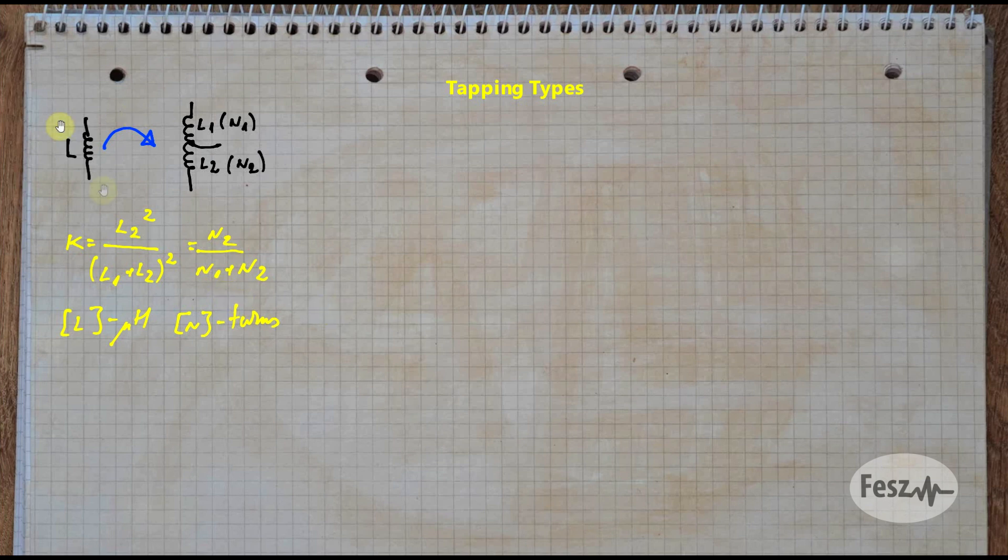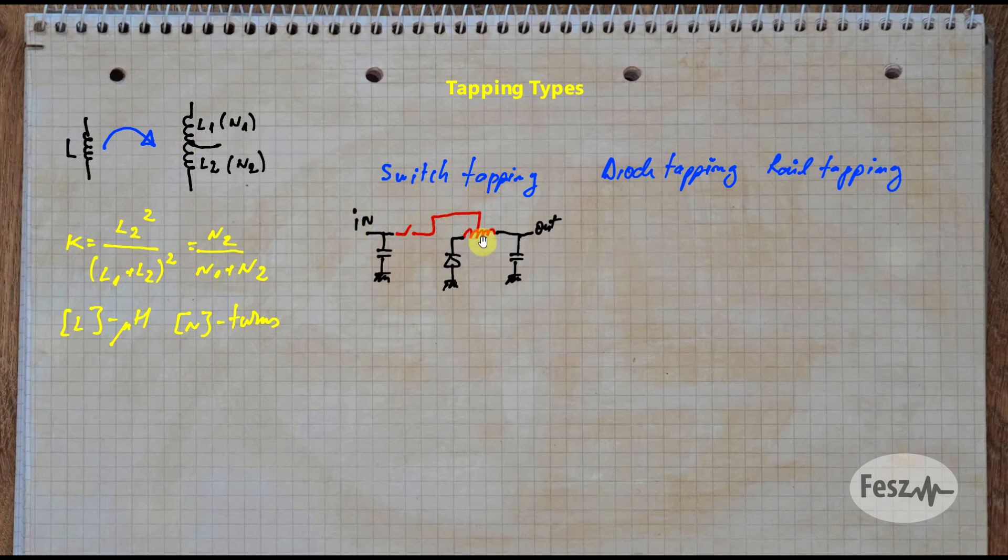Now because the two-terminal component suddenly turned into a three-terminal component, there are multiple ways to connect it into the circuit. So we have three main cases based on which component from the initial topology is connected into the middle tap. So you have switch tapping, diode tapping, and finally rail tapping.